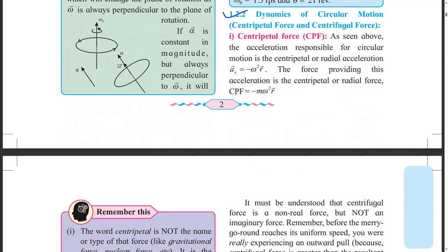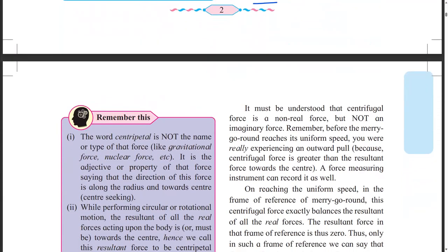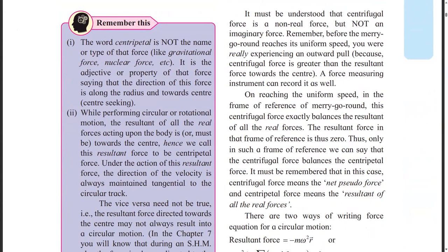So in the dynamics of circular motion, we have to learn two forces - centripetal and centrifugal force. What is centripetal force? Centripetal is the one which is circular motion happening towards the center of the body. Yeah, but there is one definition you have to write in the board exam. The force providing the acceleration towards the center, it is called centripetal or radial force. And then what is the formula? This is the formula. Minus M omega square.